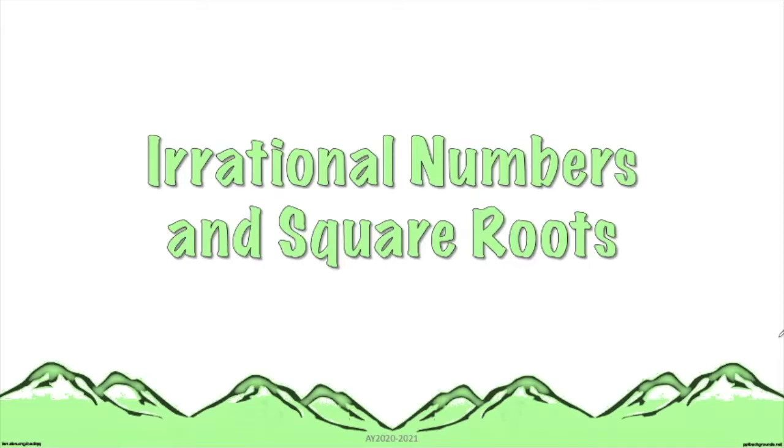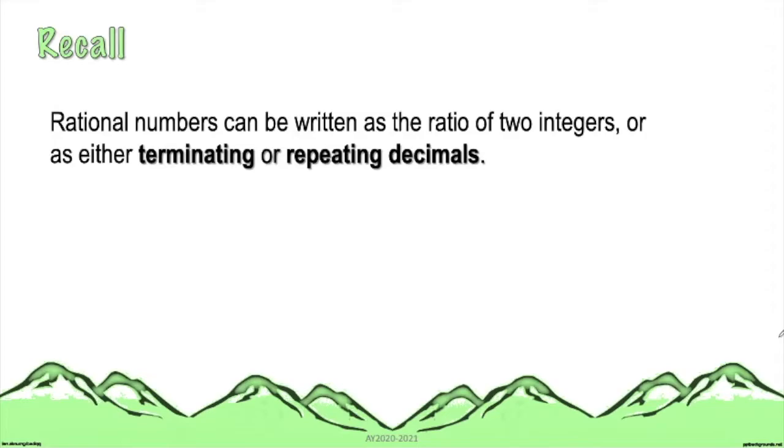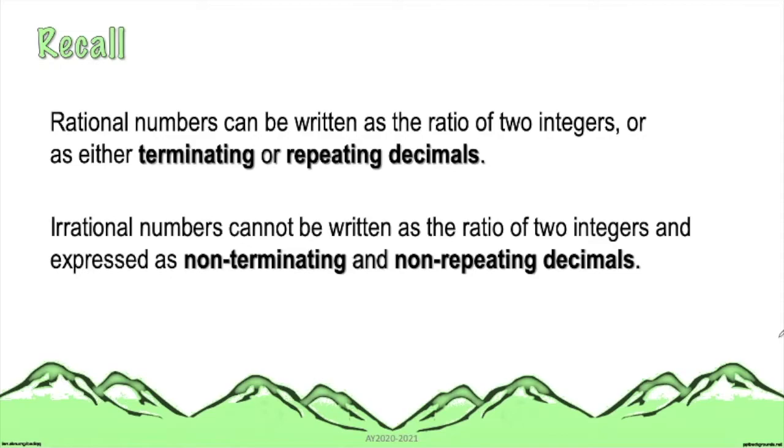This video is about irrational numbers and square roots. First, we have to recall the definition of rational and irrational numbers. Rational numbers can be expressed as terminating or repeating decimals, while irrational numbers can be expressed as non-terminating and non-repeating decimals.